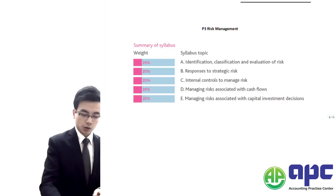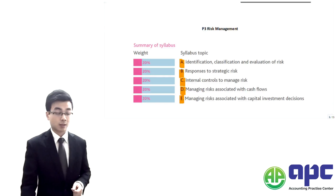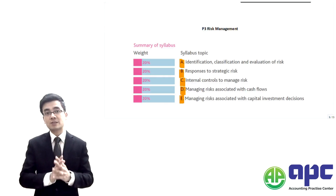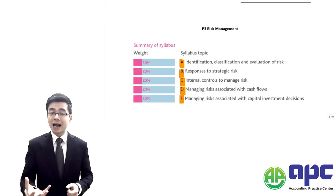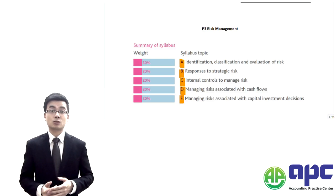We have five aspects here with regards to the CIMA P3 exam. As you know, the name of this paper is Risk Management. We're going to see how we manage the risks associated with business decisions.